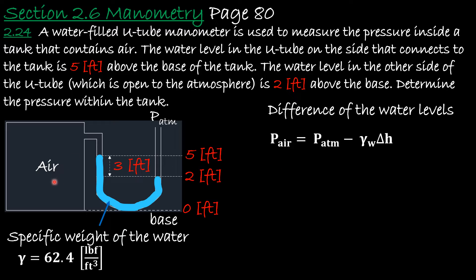We want to find the pressure of the air. We go all the way to the right side — the pressure of the atmosphere — which is pressing on the water on the open side. In static fluids, fluid at the same horizontal level has the same pressure, so the pressure at that level on the left equals the pressure at that level on the right. Then as we go up 3 feet, the pressure decreases, hence a negative sign.